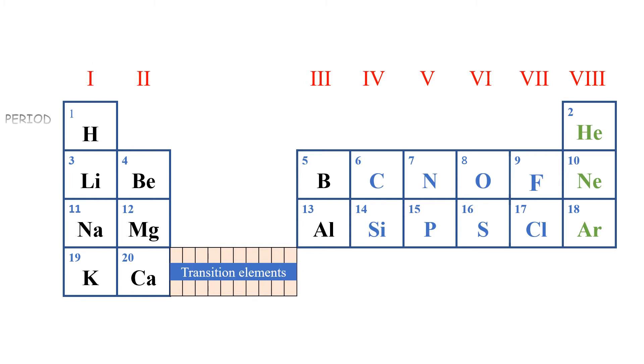We also have what we call the periods. Now, periods are the horizontal rows that we shall see in this table. For example, period 2 will be this horizontal row. We shall have lithium, beryllium, boron, carbon, nitrogen, oxygen, fluorine, and neon. This will be period 2.